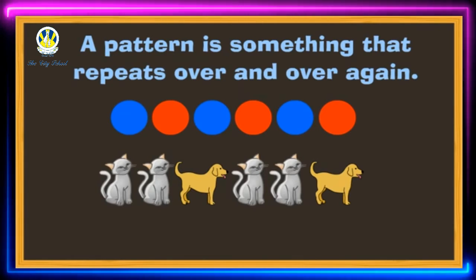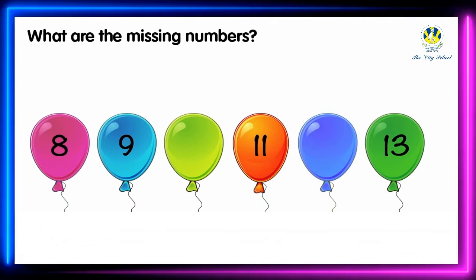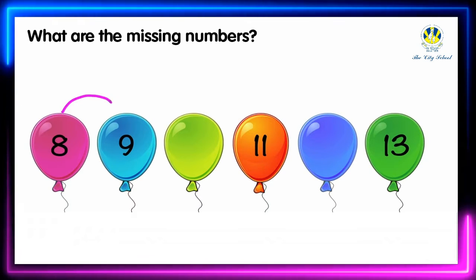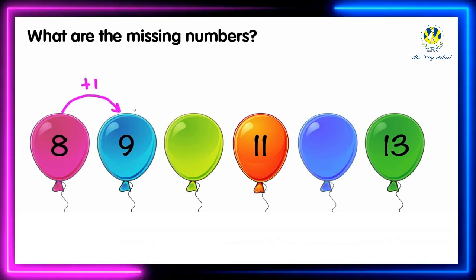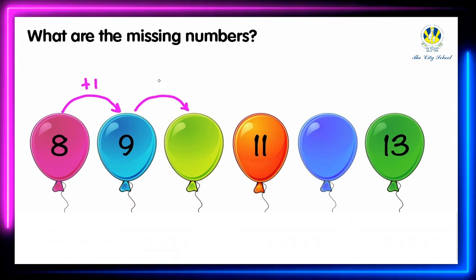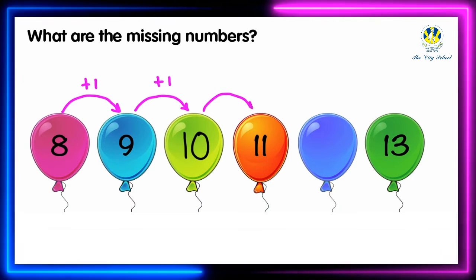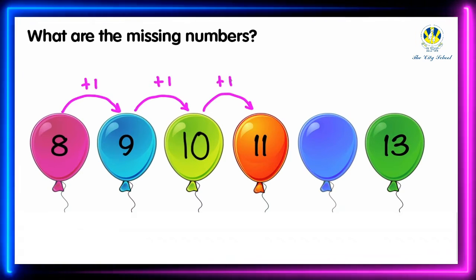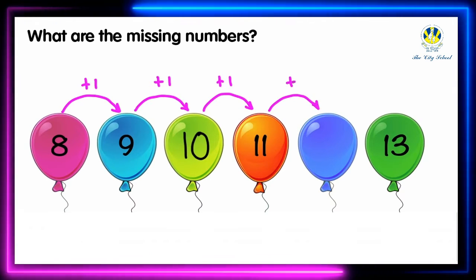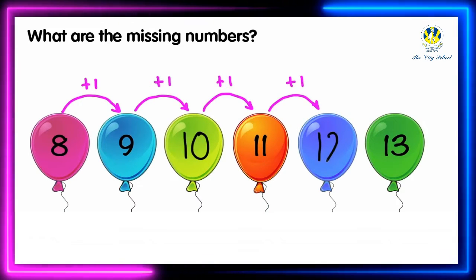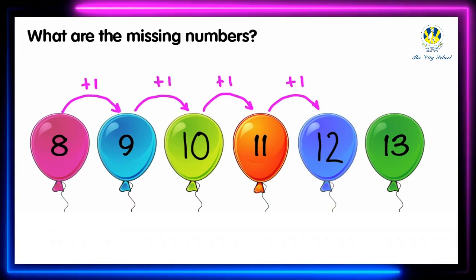Let's identify the pattern to find the missing numbers. 8 plus 1 equals 9, 9 plus 1 equals 10, 10 plus 1 equals 11, 11 plus 1 equals 12. In each step the numbers increase by 1, so we are adding 1 to get the next term.